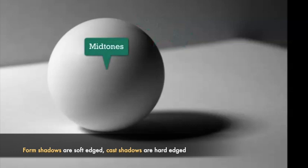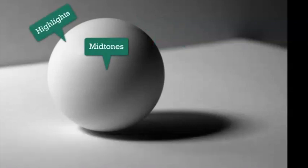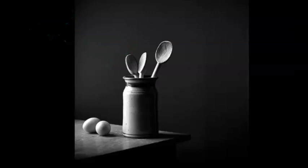Highlights are the brightest part of an object — even a dark object can have a highlight; it doesn't have to be a light-colored object. Those are the key ingredients. Now let's look at some still life so you can see where the light source is emanating from — in this case it's coming from the left-hand side.